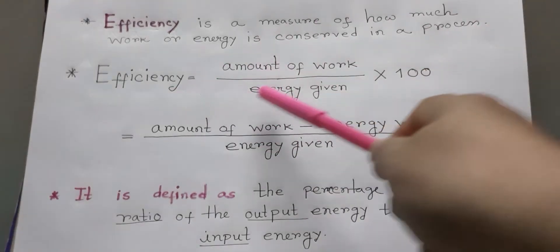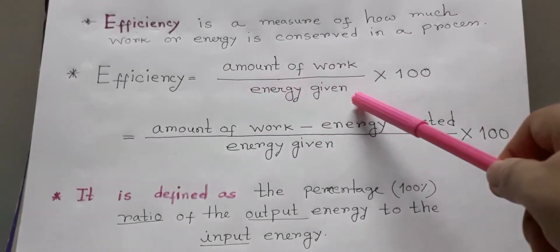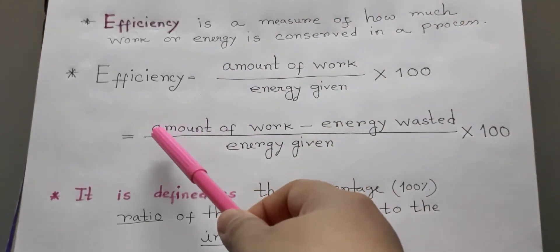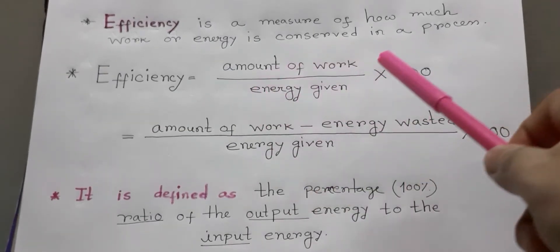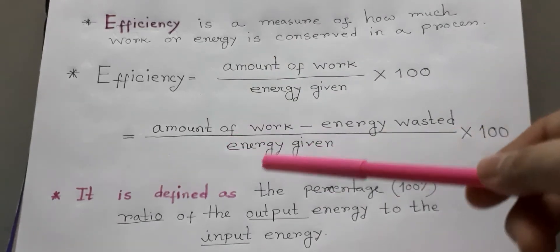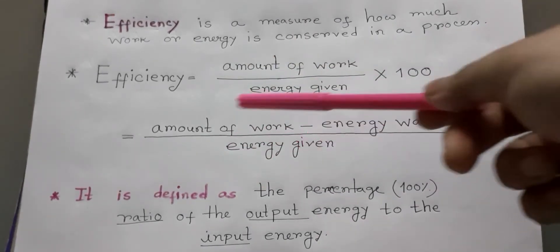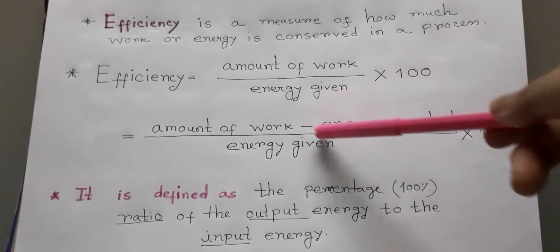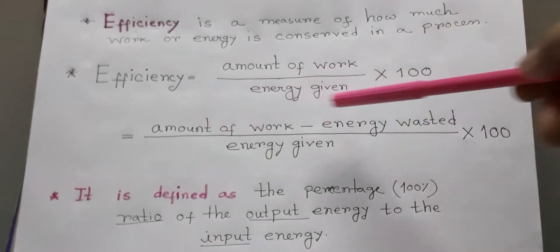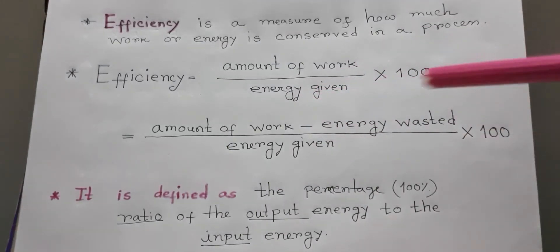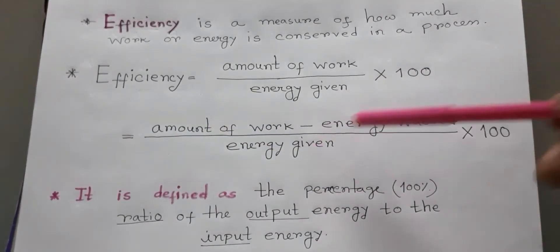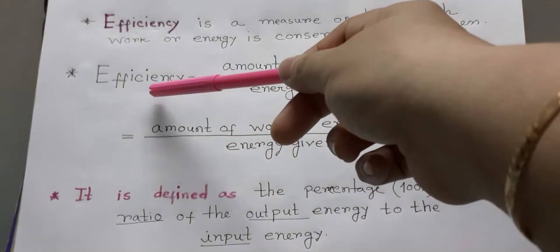Efficiency has a formula — amount of work and energy given — and it is always expressed as a percentage. The formula is: amount of work divided by energy given. That means the amount of work we want to do, we have to give more energy. Due to friction and some other causes energy is wasted, so we don't get the amount of work from the energy wasted. Therefore, the formula of efficiency is: amount of work minus energy wasted, divided by energy given, into 100.